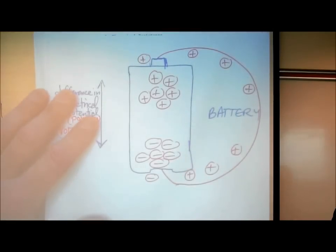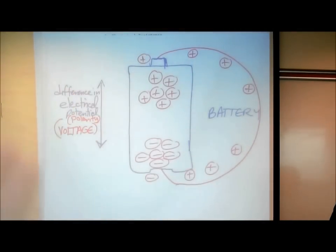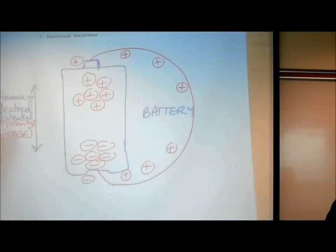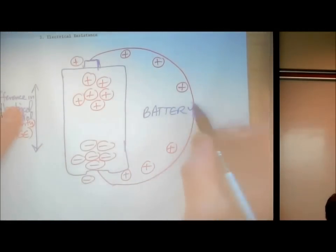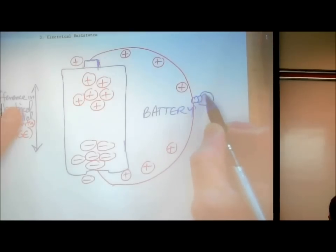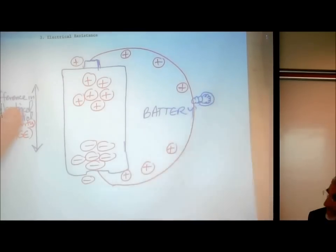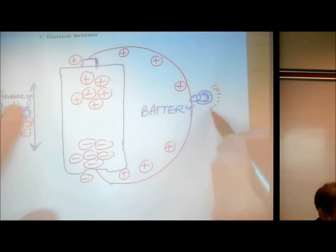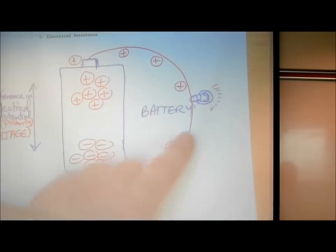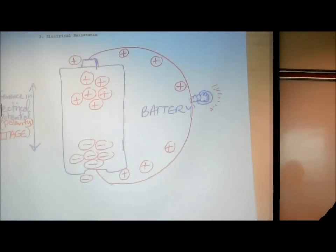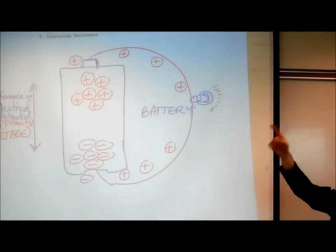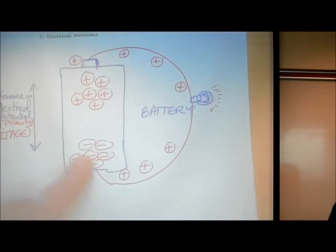An electrical current is the movement of electrical charges. In fact, these electrical charges are so excited — the positives are so excited about going to where those negative charges are — that if you put a little flashlight light bulb in the circuit and made the electrical charges go through the filament, it would cause that tungsten wire loop to glow as they move in the direction they want to.